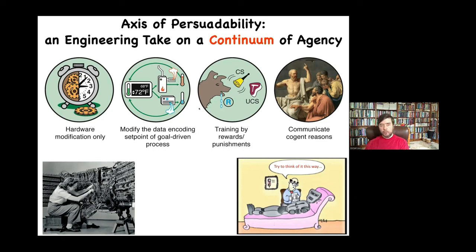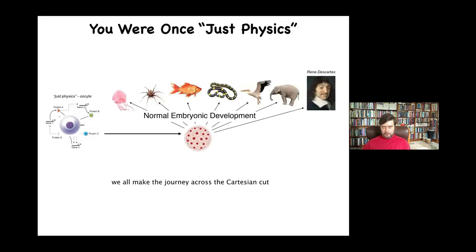It's an empirical question — which affords the richest and the best interaction: hardware modification, or maybe even something like rational persuasion. The key to starting to think like this is to realize that all of us journeyed across what used to be called the Cartesian cut.